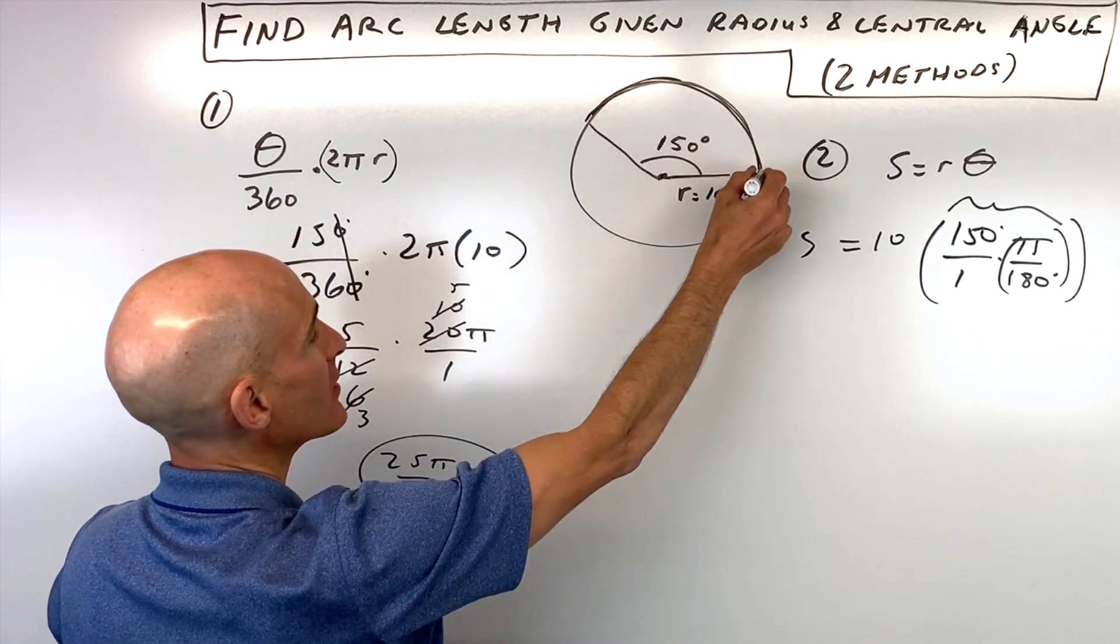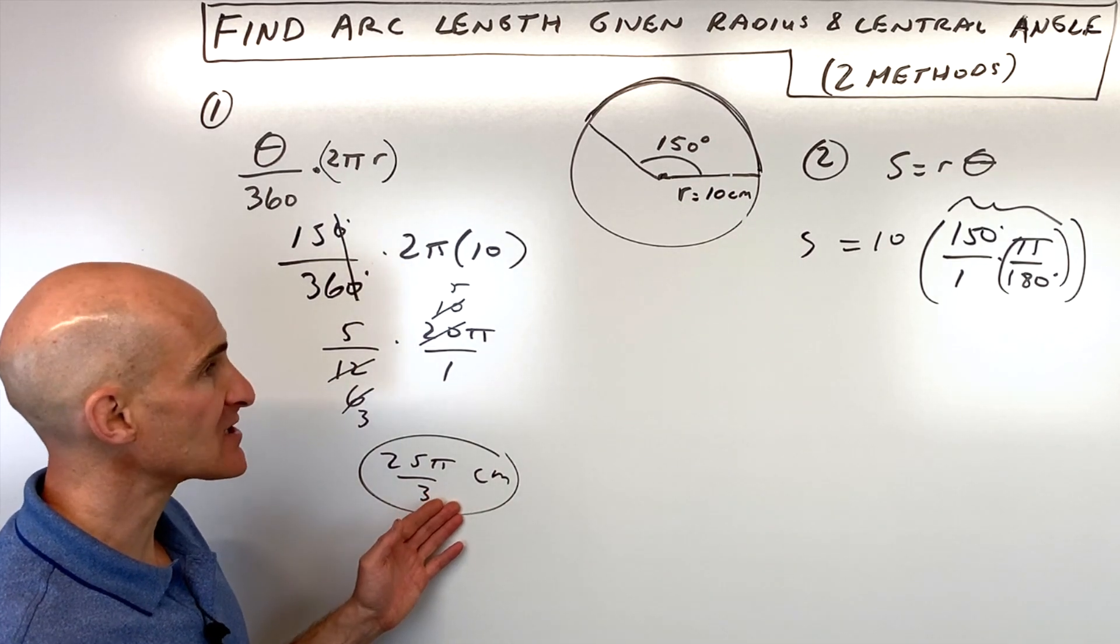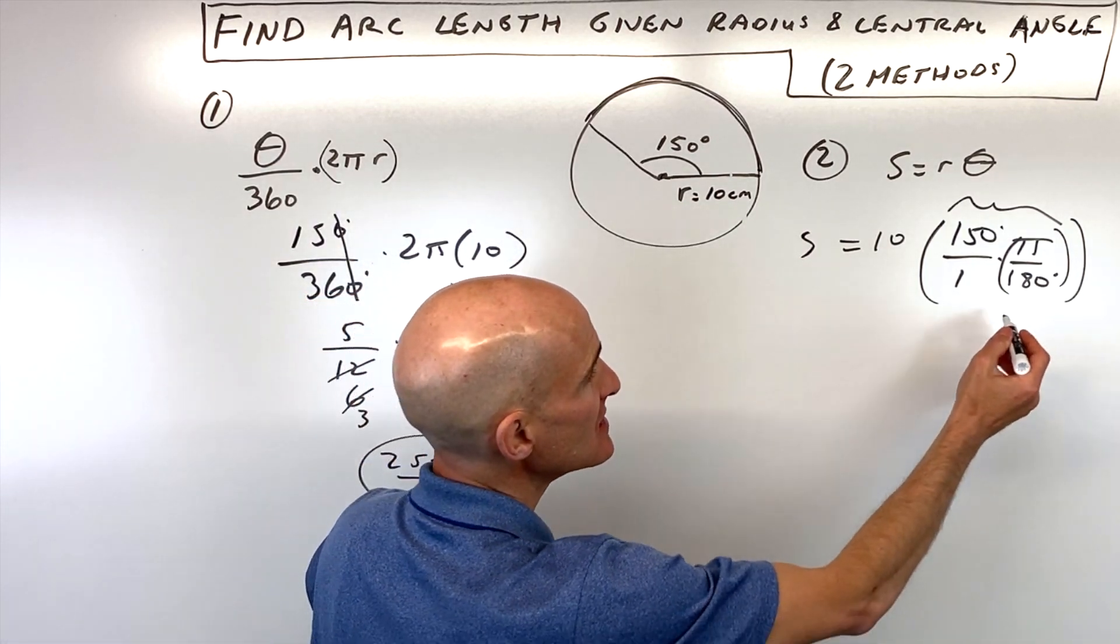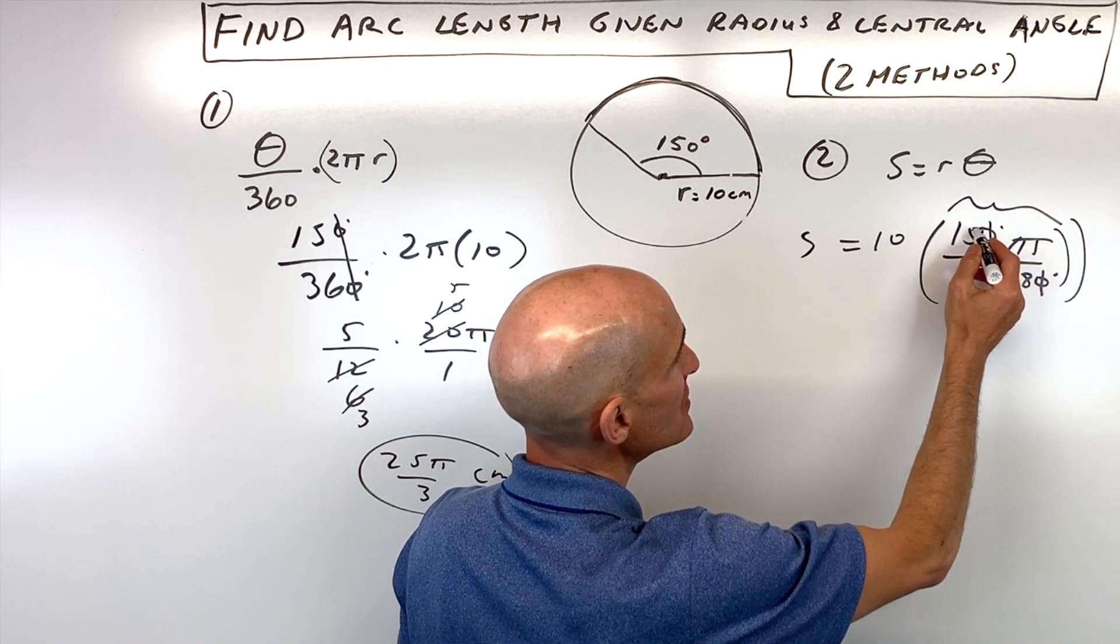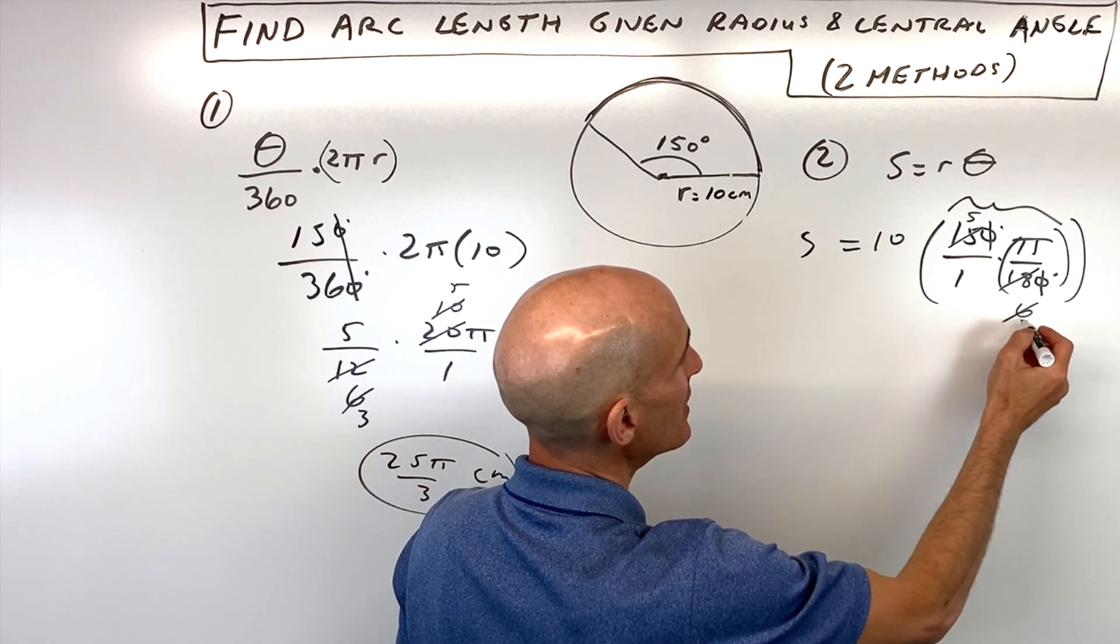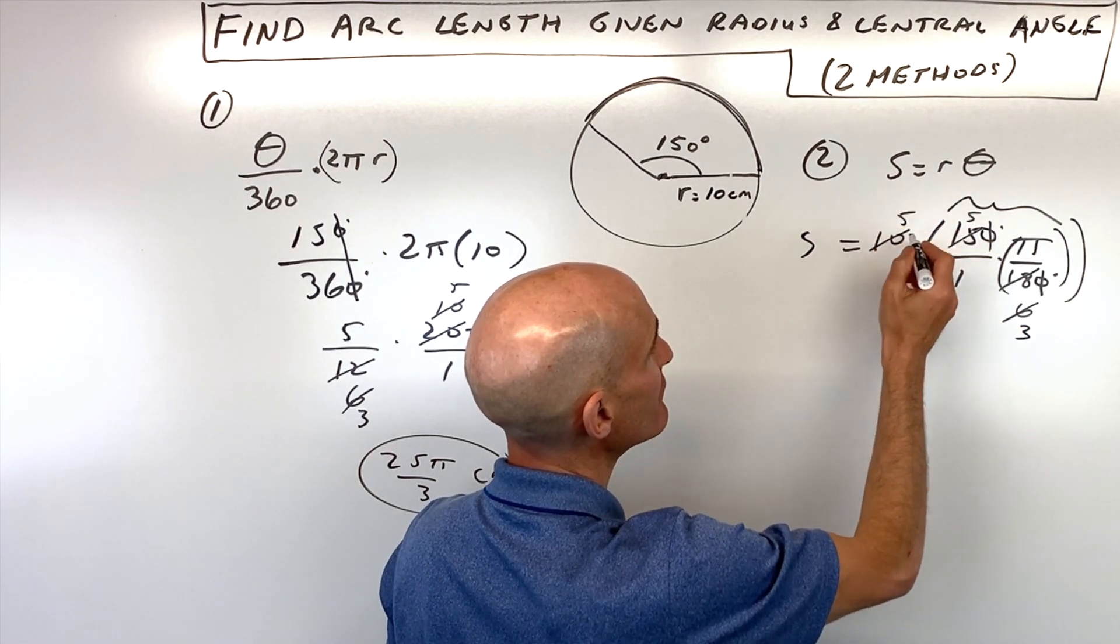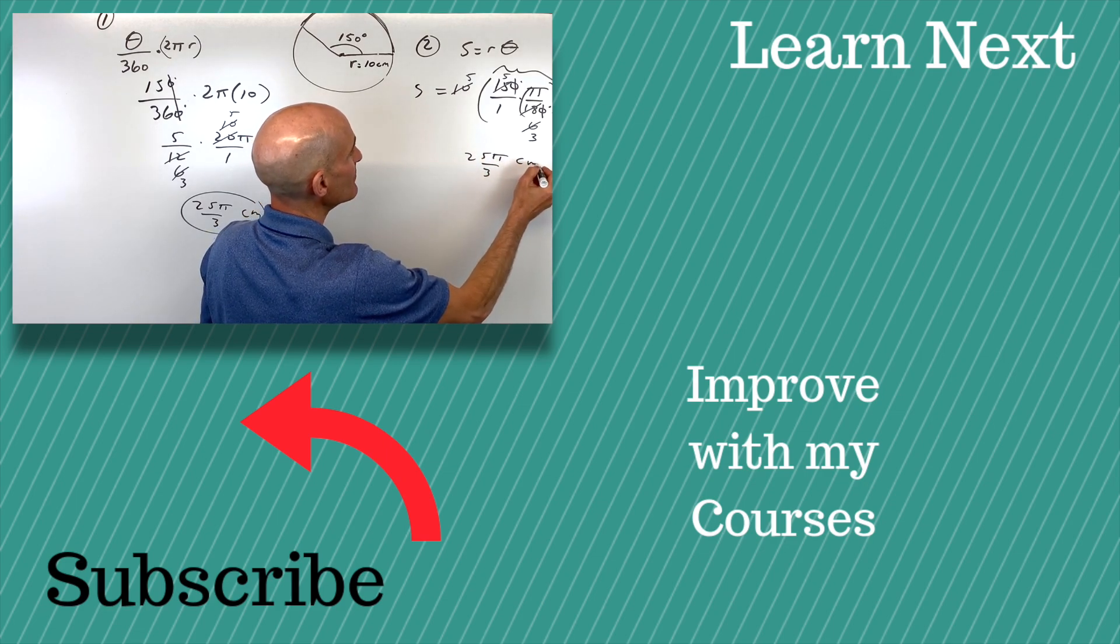That's the length of the arc - an exact answer. You can substitute 3.14 for a decimal approximation. For the second method, we reduce by dividing by 10. Three goes in 5 times and 6 times, two goes in 3 times and 5 times. We get the same answer: 25π over 3 centimeters.